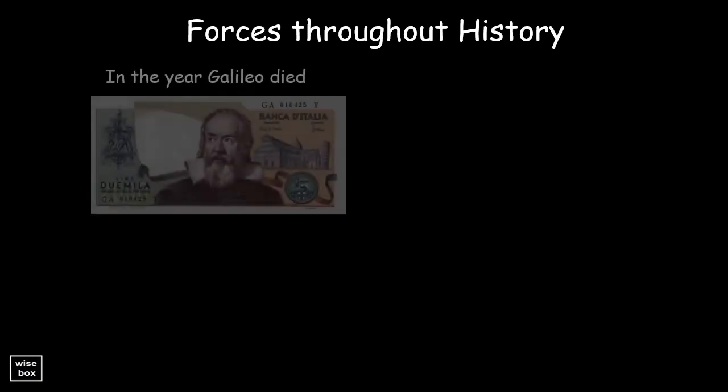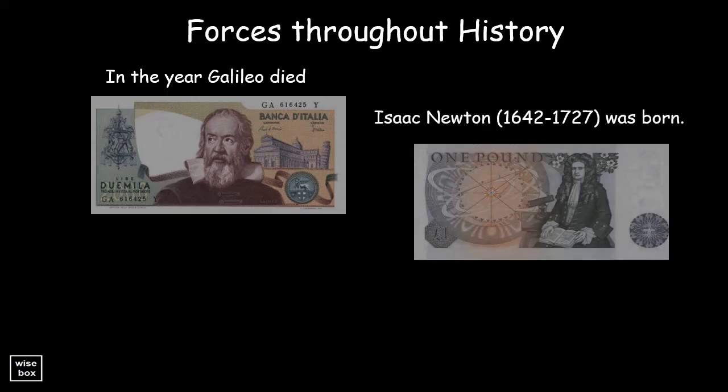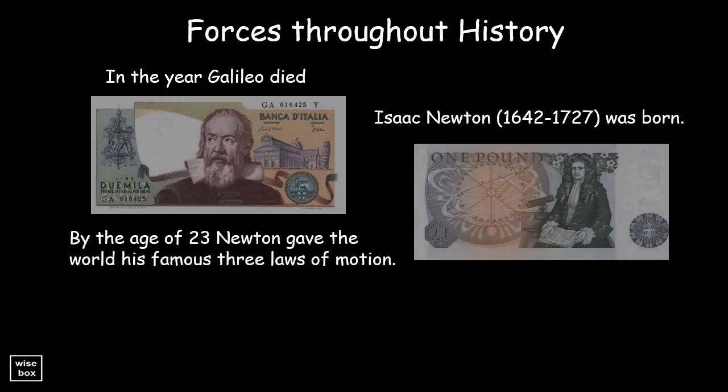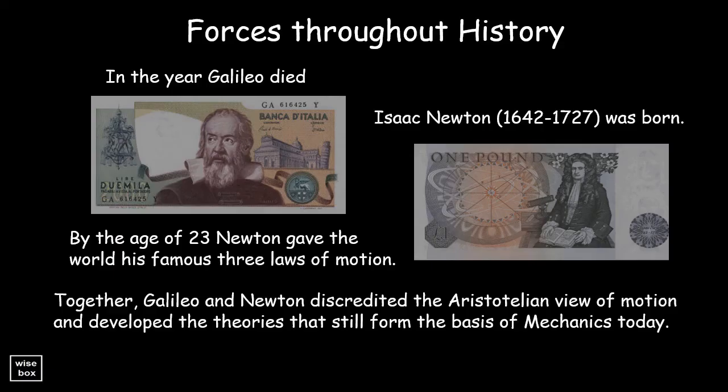In the year Galileo died, Isaac Newton was born. By the age of 23, Newton gave the world his famous three laws of motion. Together, Galileo and Newton discredited the Aristotelian view of motion and developed the theories that still form the basis of mechanics today.